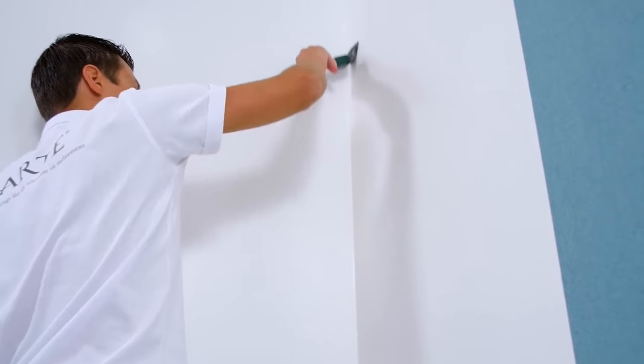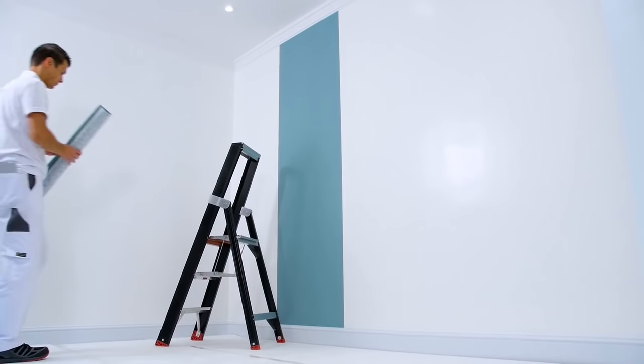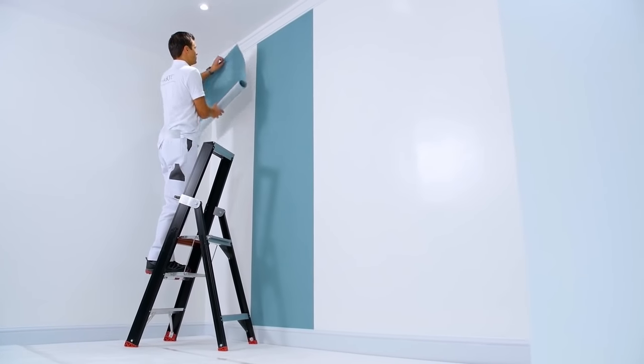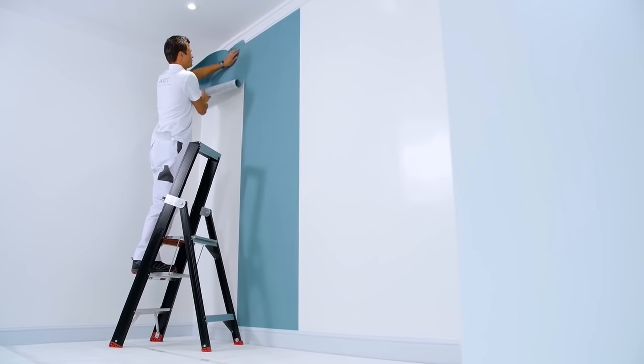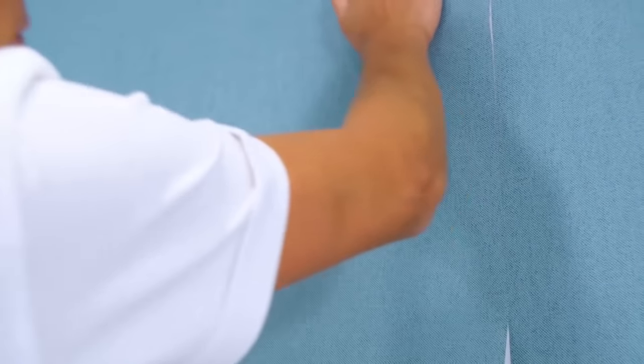Paste the rest of the wall and use the brush again for the corner. Place the second strip against the first one. Again allow a little extra wall covering at the top and bottom. Slide the strip until it is hanging just right and then press well with the spatula.